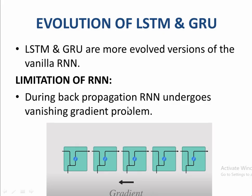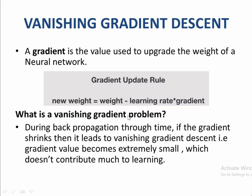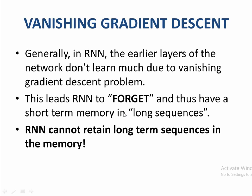What was the limitation of RNN? During back propagation, RNN undergoes the vanishing gradient problem. The gradient update rule is: new weight equals weight minus eta times gradient, that is learning rate times gradient. During back propagation, if the gradient is too small, then learning rate times gradient will be a very small value, resulting in no meaningful weight changes. The gradient starts shrinking and becomes extremely small, which does not contribute towards learning. That is vanishing gradient.